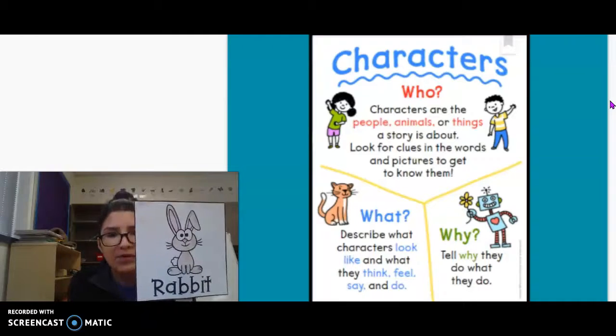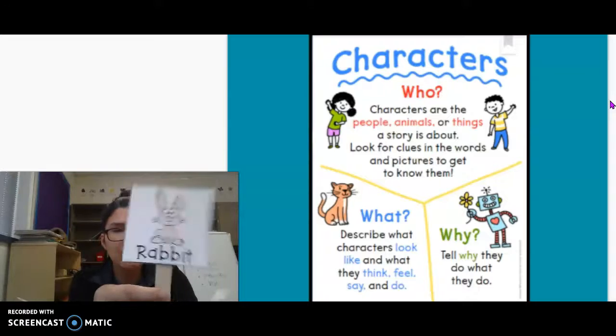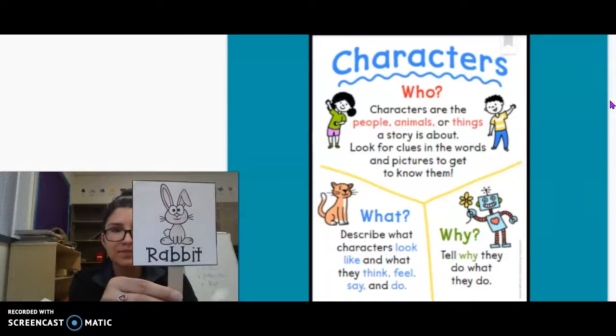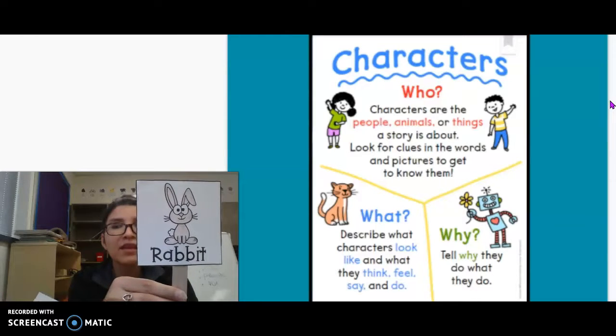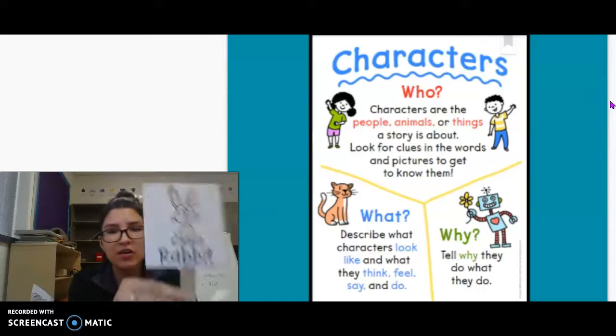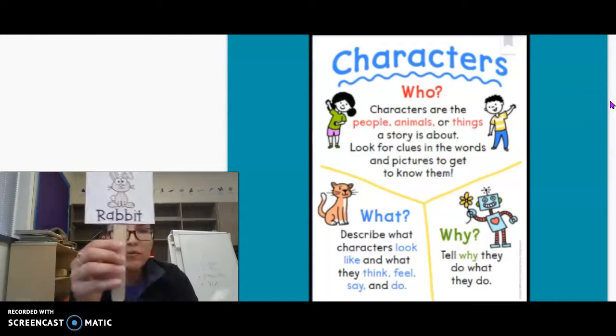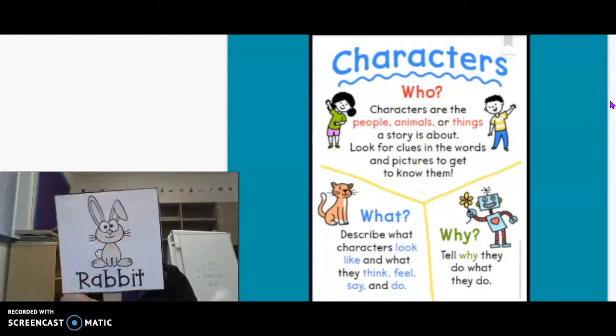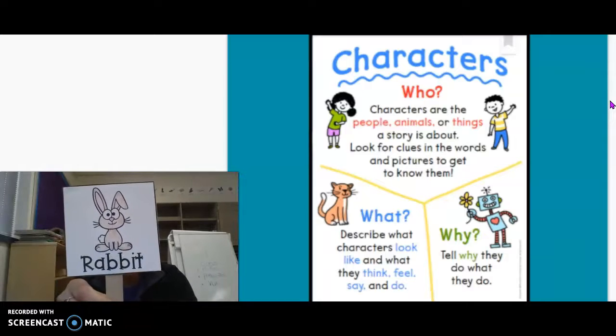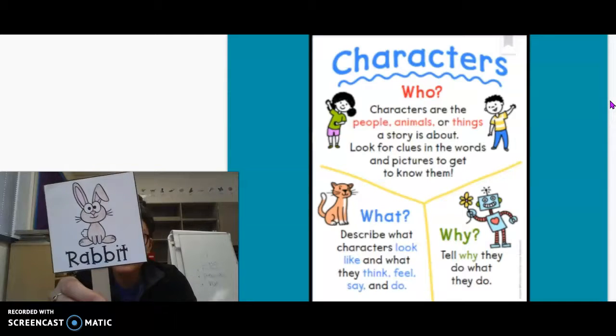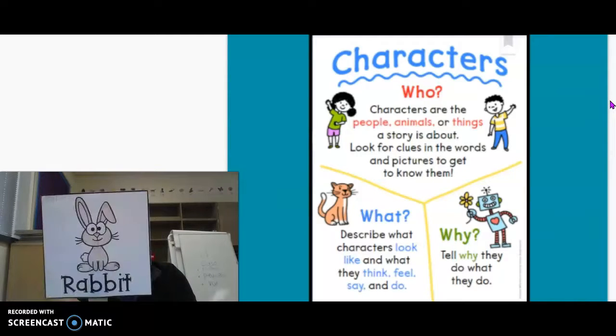Now, why does rabbit do, why does rabbit behave the way rabbit does? Right. Because rabbit is just trying to be a good friend and cheer skunk up. Now we do find out at the end of the play that rabbit is the one responsible for taking all the vegetables, but rabbit thought, you know, Hey, it's community garden.